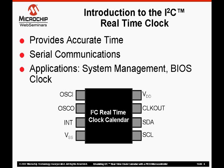Shown below is a pinout for an existing I2C real-time clock integrated circuit. If you look at the pins, you can see that you have oscillator input and outputs for connecting to an external crystal. There are also serial data and serial clock lines that connect to the I2C serial communications bus of your system. There are also other features shown in this pinout, like an interrupt pin, which is typically used for indicating alarms when you reach a certain time, and also a digital clock out pin as well.